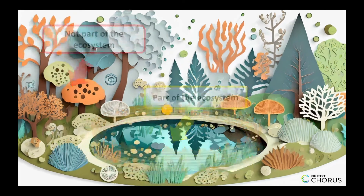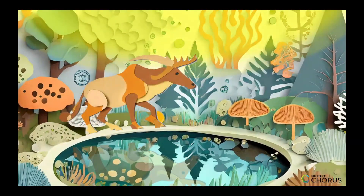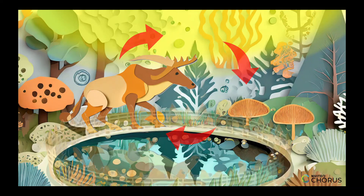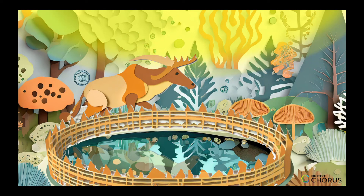In summary, in an ecosystem, matter is recycled continuously, while energy flows through it. The sun provides energy, and plants use that energy to make food. Animals eat the plants and release heat energy back into the environment. Ecosystems have boundaries that separate them from other ecosystems.